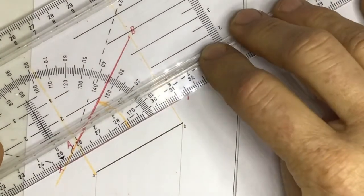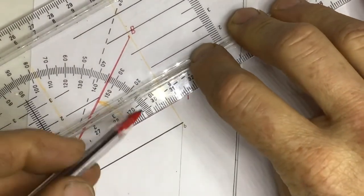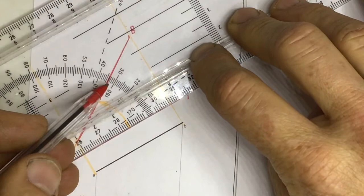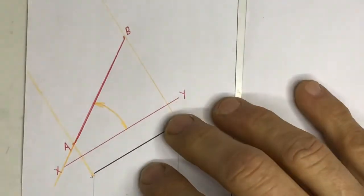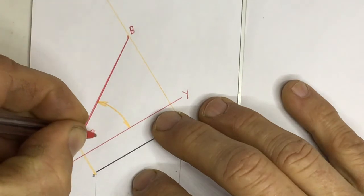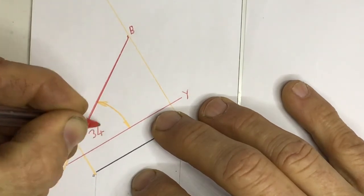And you can see that I have got, it says 10, 20, 30, 34 degrees. So I can write in over here, 34 degrees.